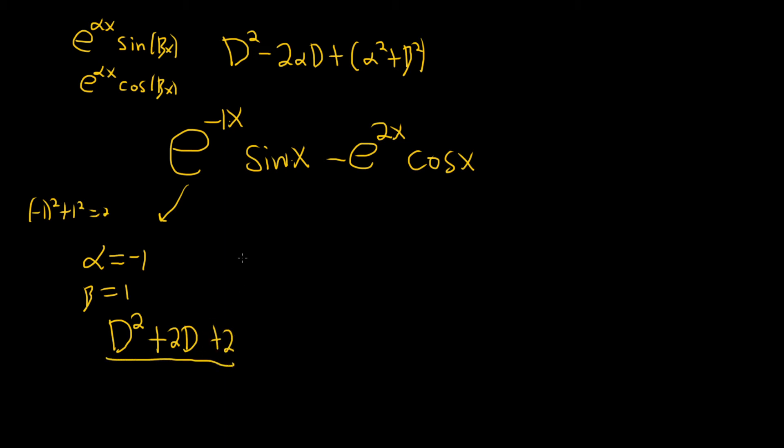So that's the annihilator for this piece here. For the next piece, alpha is 2, and beta is still 1.